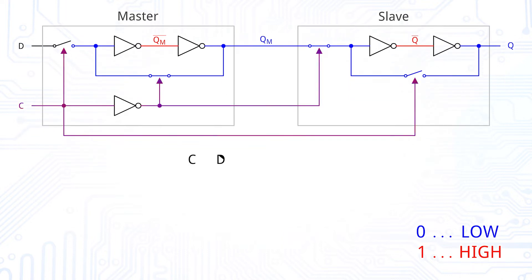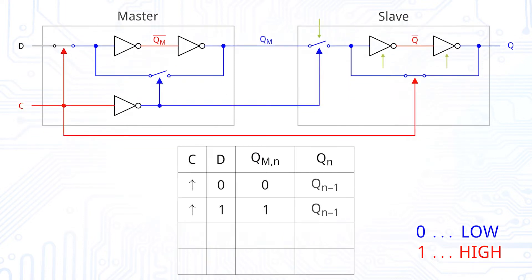If the clock signal switches from low to high, the slave is separated from the master and the slave's inverters are put into a loop. The slave still keeps the last output of the master.